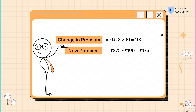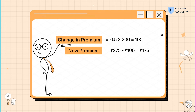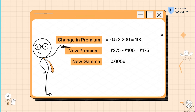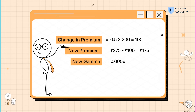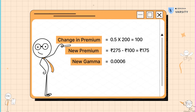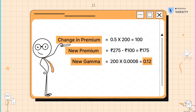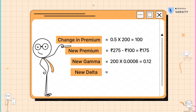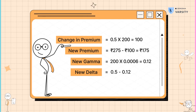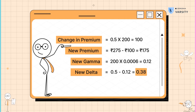With the change in underlying, the delta has to change. We know that the gamma of this option is 0.0006, which tells us that for every one point change in the underlying, the delta should change by 0.0006 points. The total change in underlying is 200 points, so 200 times 0.0006 is 0.12. Therefore, the new delta is the old delta minus the change in delta — which is 0.5 minus 0.12, which is 0.38.